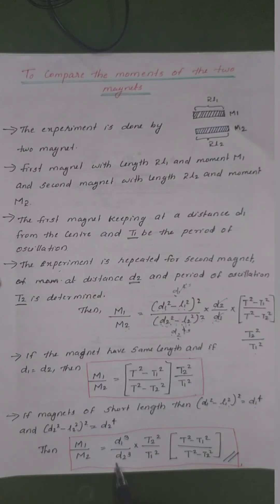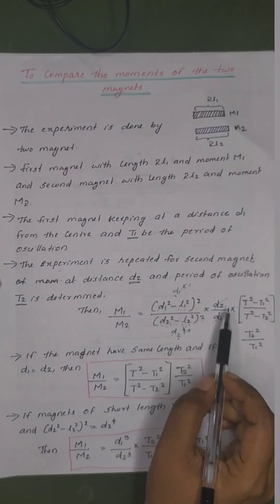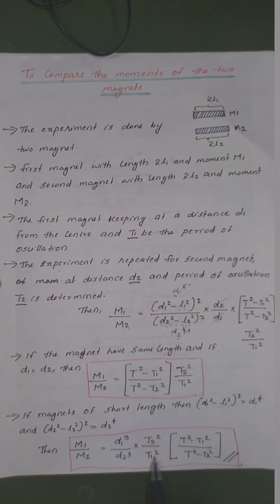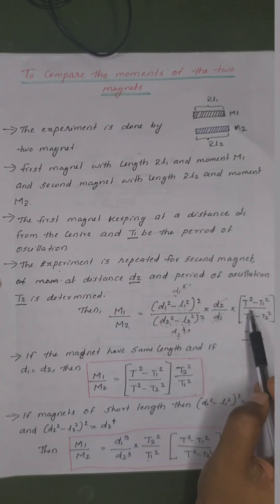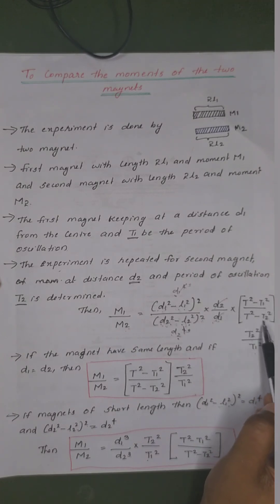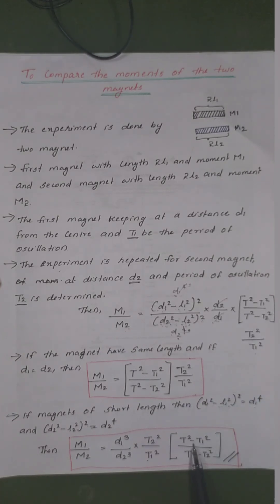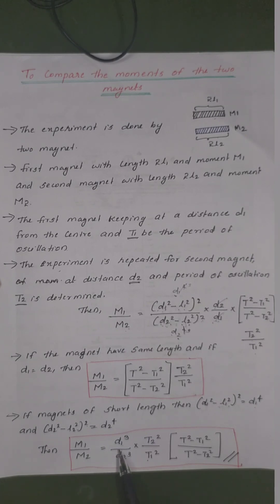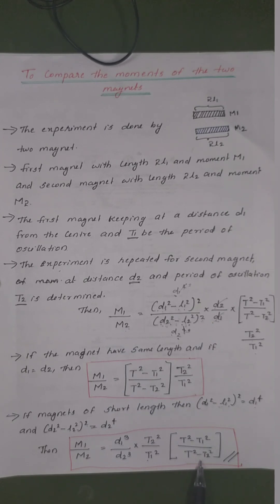Then the term equals 1, into T2 squared by T1 squared, into T2 minus T1 squared divided by T2 minus T2 squared. The ratio of magnetic moments of two magnets, M1 by M2, is equal to D1 raised to 3 divided by D2 raised to 3, into T2 squared by T1 squared, into T squared minus T1 squared divided by T squared minus T2 squared.